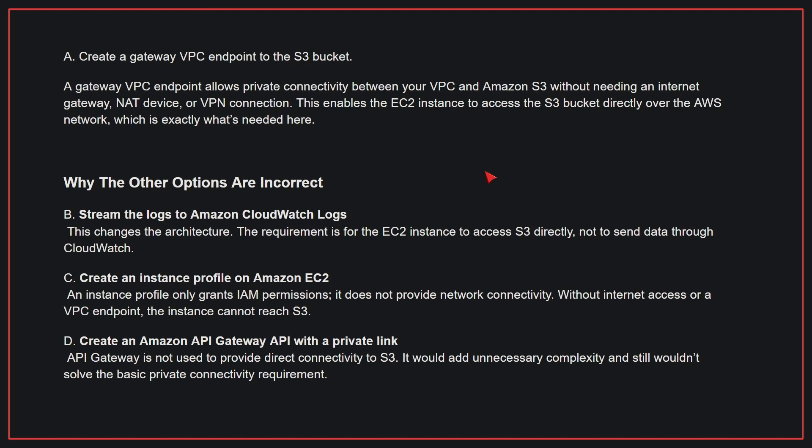Why the other options are incorrect: B — Streaming the logs to Amazon CloudWatch Logs changes the architecture; the requirement is for the EC2 instance to access S3 directly, not to send data through CloudWatch. C — Creating an instance profile on Amazon EC2 only grants IAM permissions and does not provide network connectivity; without internet access or a VPC endpoint, the instance cannot reach S3. D — Creating an Amazon API Gateway API with a private link is not used to provide direct connectivity to S3 and adds unnecessary complexity. Therefore, the correct answer is A.